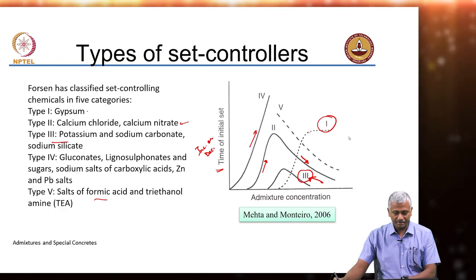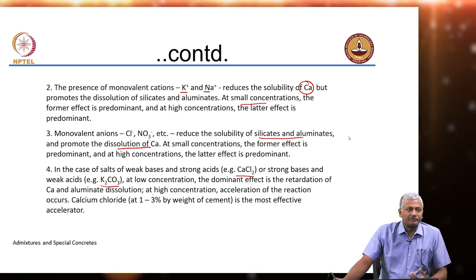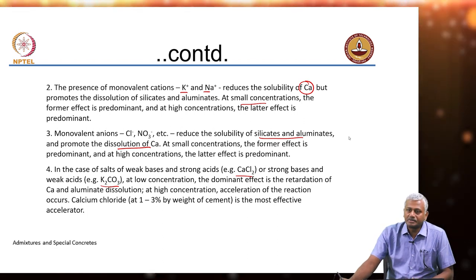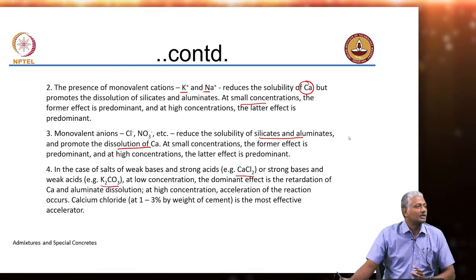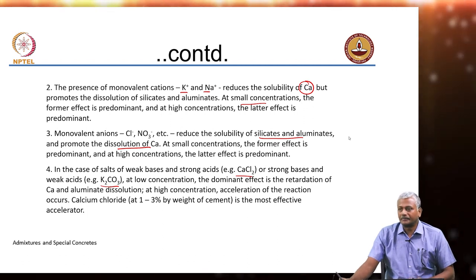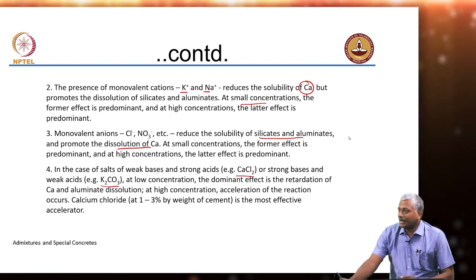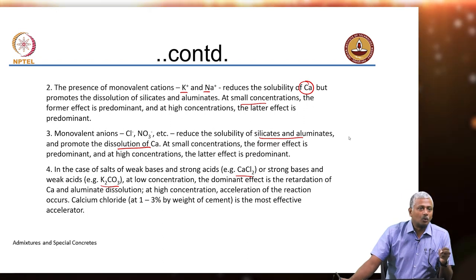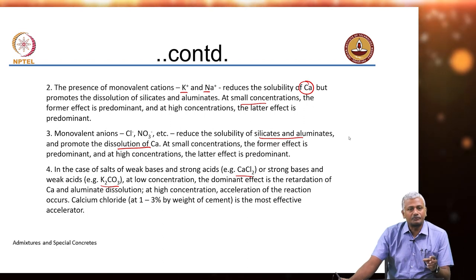We will resume where we left off in the last class with different types of accelerators. We were looking primarily at the commonalities between different types of chemicals when they are included in cementitious systems, from the perspective of what kind of action would dominate depending upon the type of anions and cations present in the admixture. The dissolution of this chemical into water will change the rate at which dissolution of cementitious compounds happens.